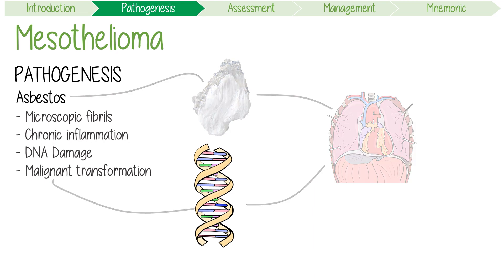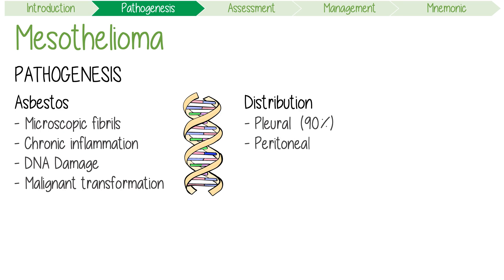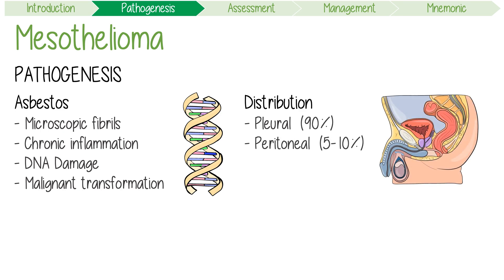Now let's focus on its anatomic distribution. Pleural mesotheliomas account for 90% of cases. Peritoneal tumours account for 5–10%, while pericardial tumours occur 1% of the time.